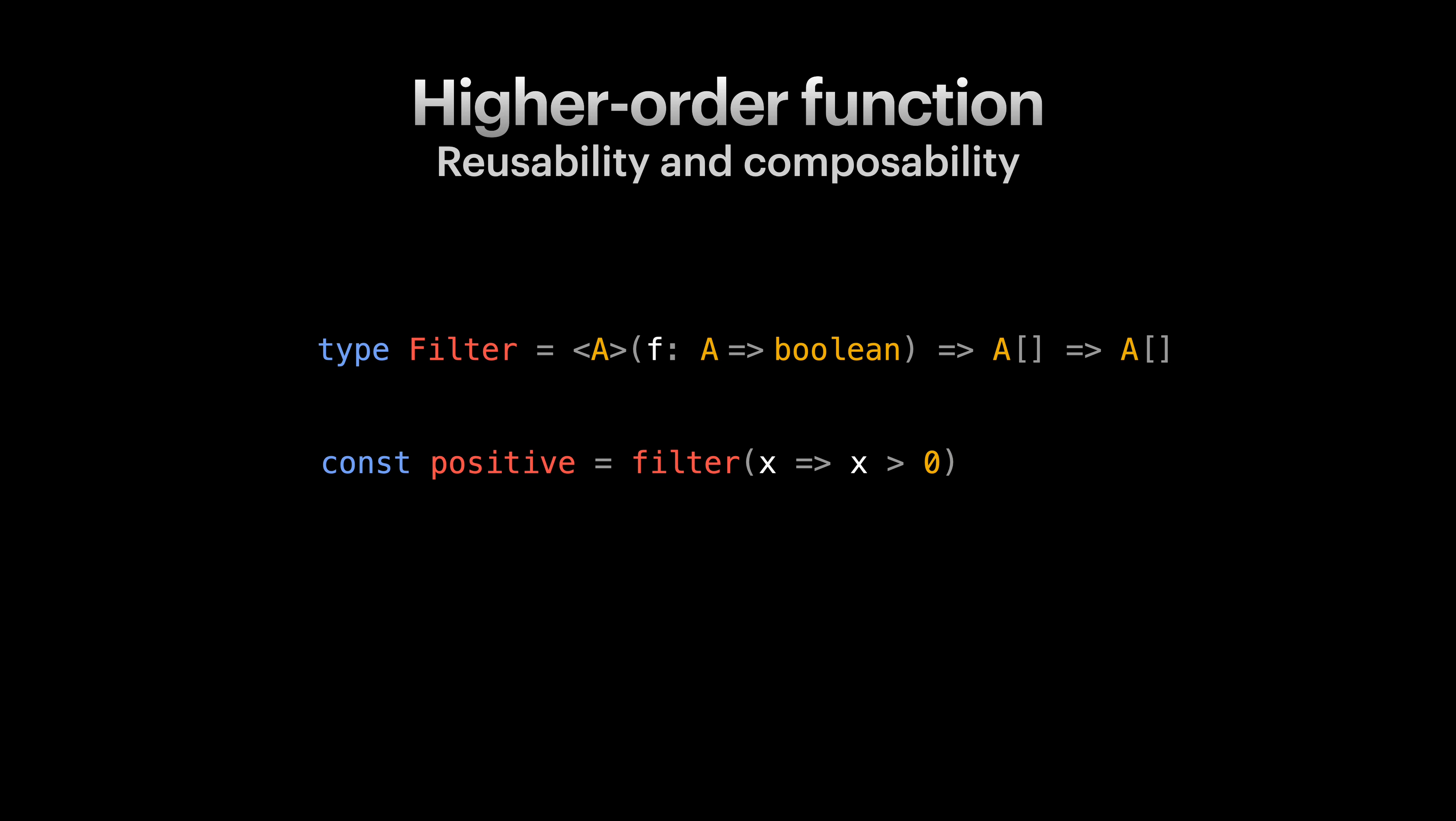By partially applying this predicate function to filter, we are receiving another function, which here we are naming it positive. The positive function is simply a function, ready to receive an array of numbers, and returns an array with only positive numbers included.